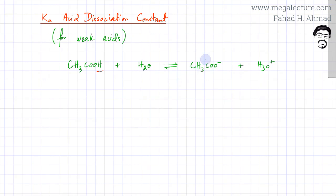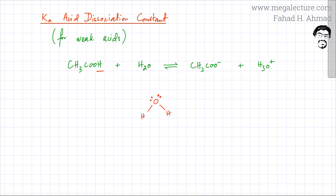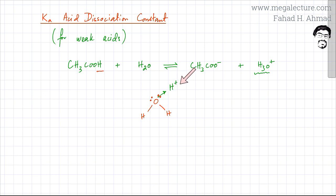Now remember, in solution, when an acid produces an H⁺ ion, that H⁺ ion is not just simply roaming around in water. Water has lone pairs present on its molecules, and these lone pairs are going to attract those H⁺ ions. The H⁺ would end up forming a dative bond with that water molecule, resulting in the formation of H₃O⁺. So your solution is going to contain H₃O⁺ or hydronium ions instead of the H⁺ ions.